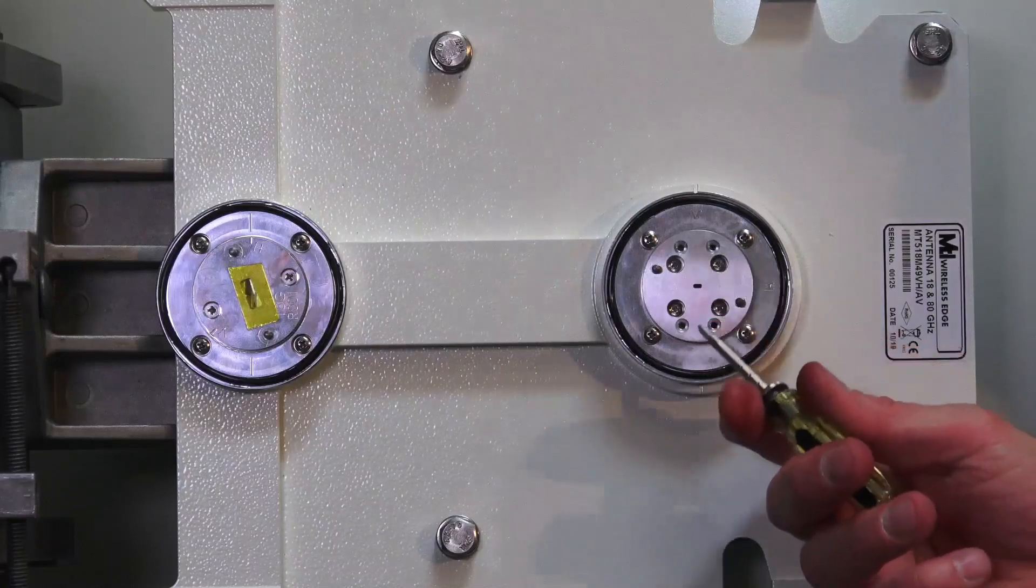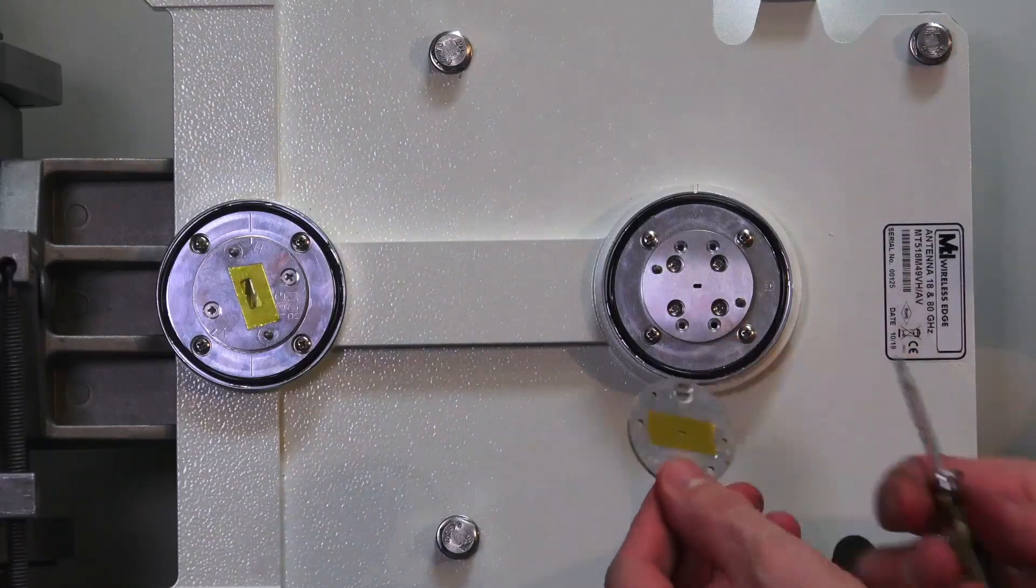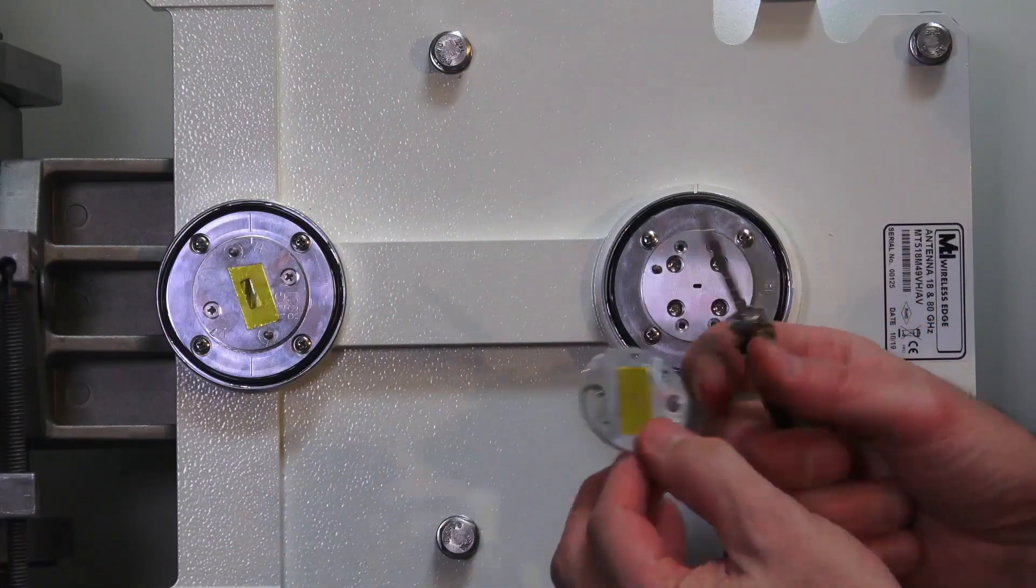Once we have our four inner screws put in, now we have to put the polarizer disc back on. Now the polarizer disc also is stamped with a V and an H of the line.